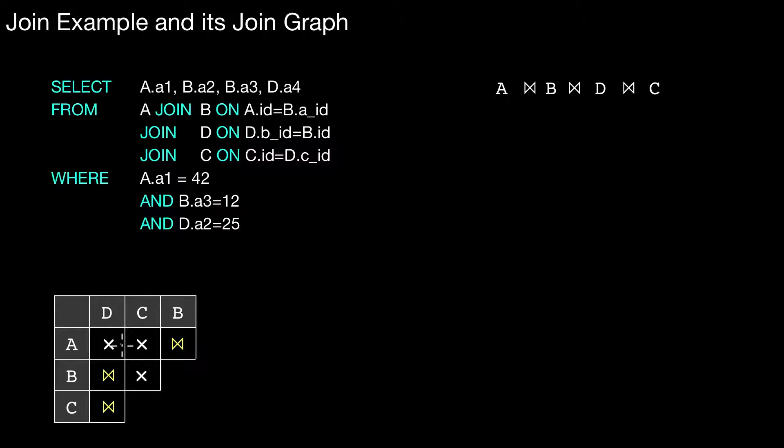For instance, we have a join condition among A and B. Therefore, here we write a join symbol. We have a join condition among D and B. Therefore, we write a join symbol here. And we have another join condition among C and D. Therefore, we have to write a join symbol here. Everything else can still be combined. However, only with a cross product.